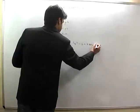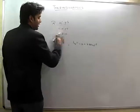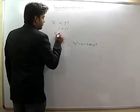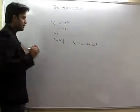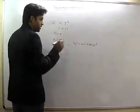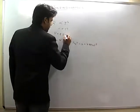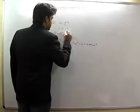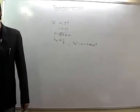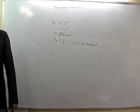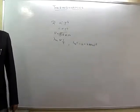For Stefan's law, the radiant energy emitted per unit time is given as E into sigma into A into T raised to power 4, where E is the emissivity, A is the total surface area of the body exposed to the surroundings, and T is the absolute temperature of the surface of the body.